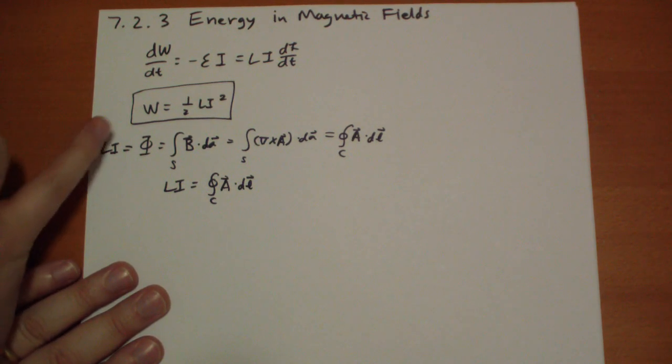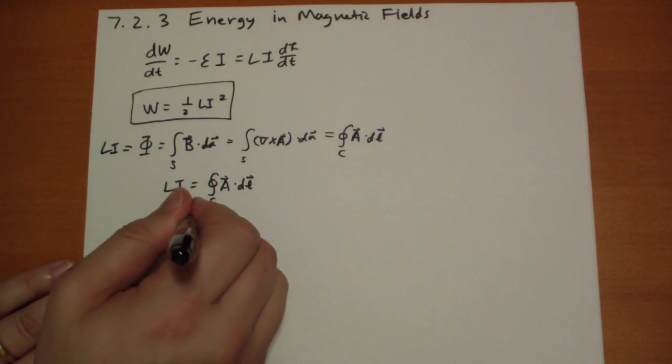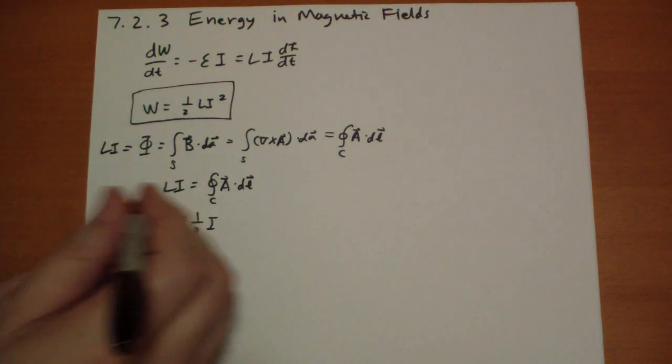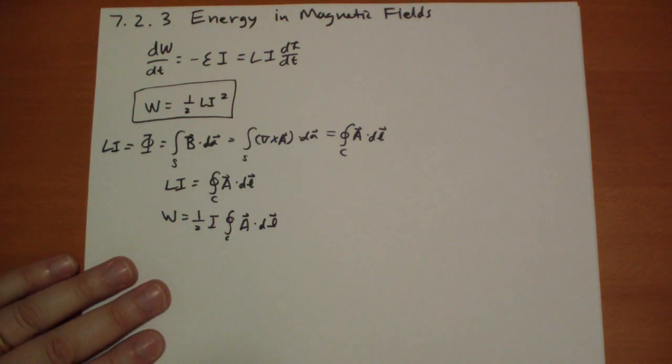And so the work, one half Li squared, so work, let's add in a factor of one half and i, and multiply it by the same.